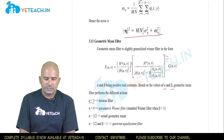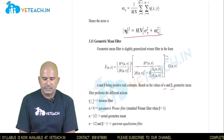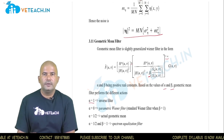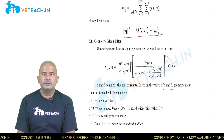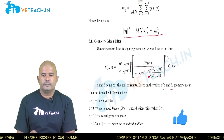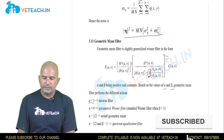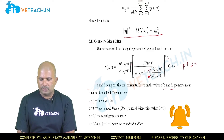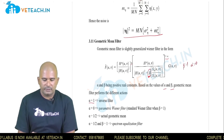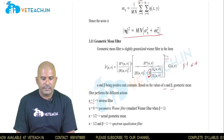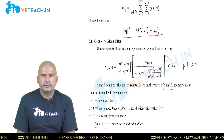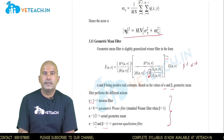If alpha equals 0, this quantity equals 1, which is the standard Wiener filter. With beta equals 1, this expression is exactly the same as the Wiener filter; by selecting different values for beta it is known as a parametric Wiener filter, because the fine-tuning parameter beta is present. If alpha equals 1/2, this equals the actual geometric mean filter. With alpha equals 1/2 and beta equals 1, the resultant function is known as the spectrum equalization filter.